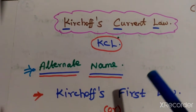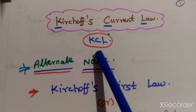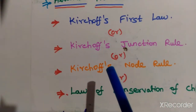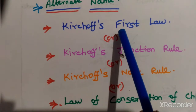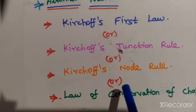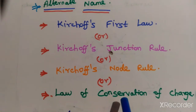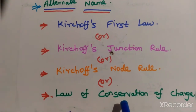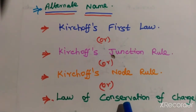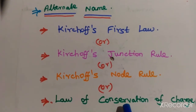Hello everyone. This video is about Kirchhoff's current law, shortly called KCL. The alternate names for KCL are: Kirchhoff's first law, Kirchhoff's junction rule, Kirchhoff's node rule, or the law of conservation of charge. These alternate names may be asked in many competitive exams.